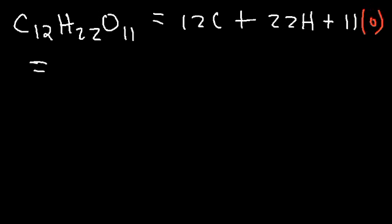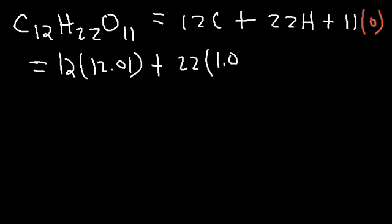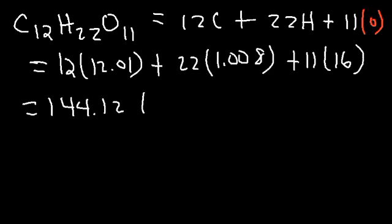So just as we did before, we're going to plug in the atomic numbers. The atomic mass of carbon, we know it's 12.01, and for hydrogen, it's the same as before, 1.008, and 16 for oxygen. So 12 times 12.01 is 144.12, and 22 times 1.008 is 22.176, and 11 times 16 is 176. So our last step is to add the three numbers.